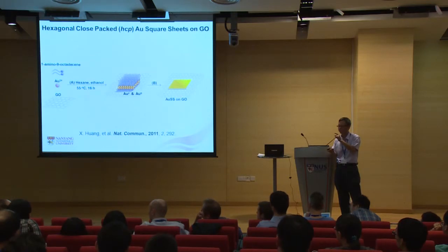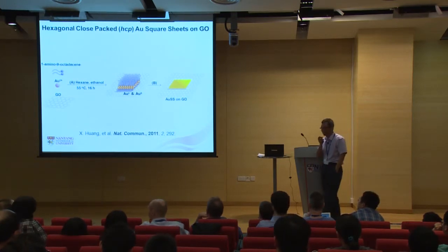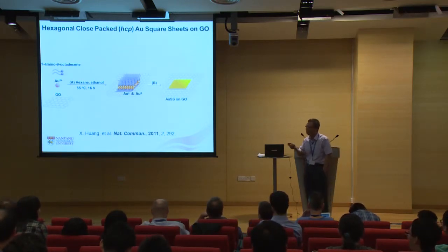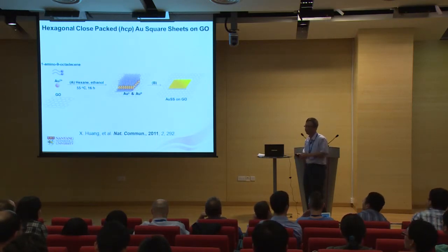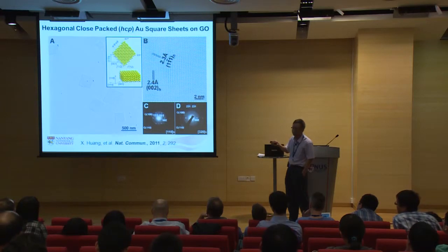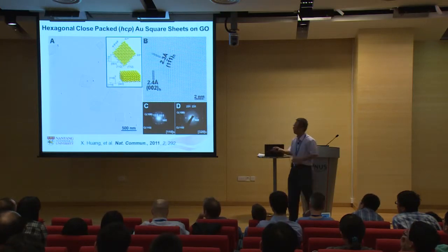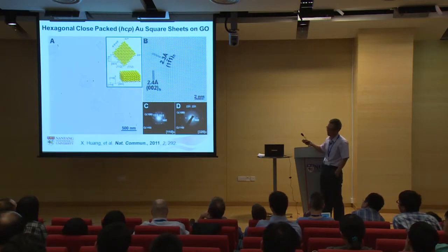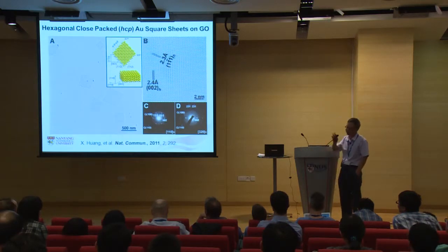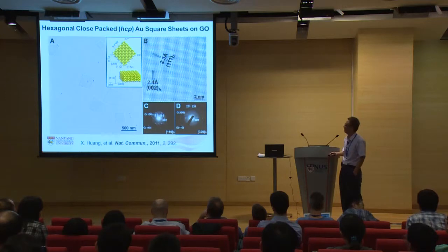An audience question was: why is the gold sheet square-shaped? Honestly, we cannot fully explain this. For FCC you'd expect a hexagonal structure, but for HCP the direction is 110, not 111. At large scale we cannot exactly explain the square shape — even when we asked others to calculate it, they could not reproduce this structure exactly.